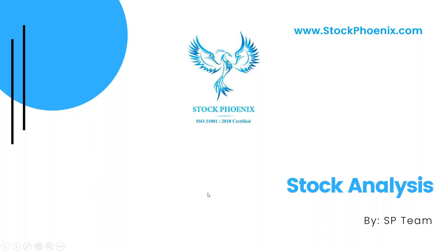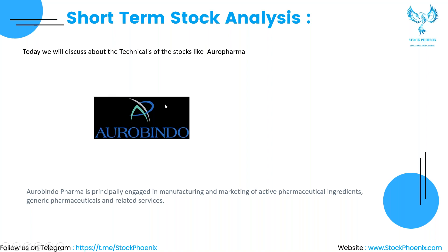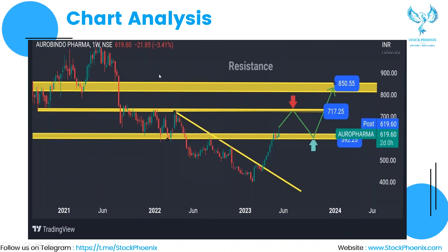Today we are going to discuss about the stock — Aurobindo Pharma. To search this particular stock in your chart, you can search as 'AUROPHARMA'. Let's discuss about the company before entering the technicals. Aurobindo Pharma is principally engaged in manufacturing and marketing of active pharmaceutical ingredients, generic pharmaceuticals, and related services — this is completely under pharma.